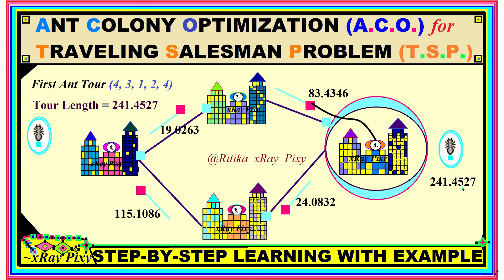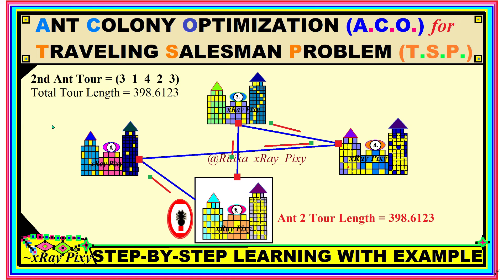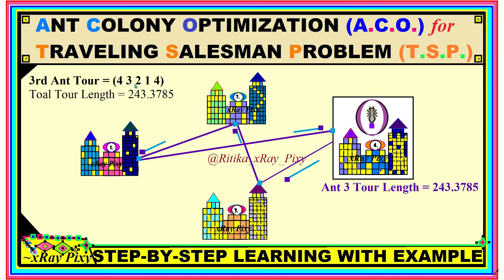Similarly, we calculate the tour length for all remaining ants. For the second ant, the randomly selected starting city is City 3. The second ant's tour is: City 3 → City 1 → City 4 → City 2 → City 3, and the total tour length is calculated. For the third ant, the tour is: City 4 → City 3 → City 2 → City 1 → City 4, with a total tour length of 243.3785.